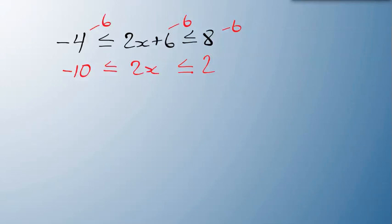Do the same thing. I need to get that 2 out of there. So I'm going to divide everything by 2. So I'm dividing all three sides by 2. I end up with minus 5 is less than or equal to x which is less than or equal to 1. So x is in between minus 5 and 1.